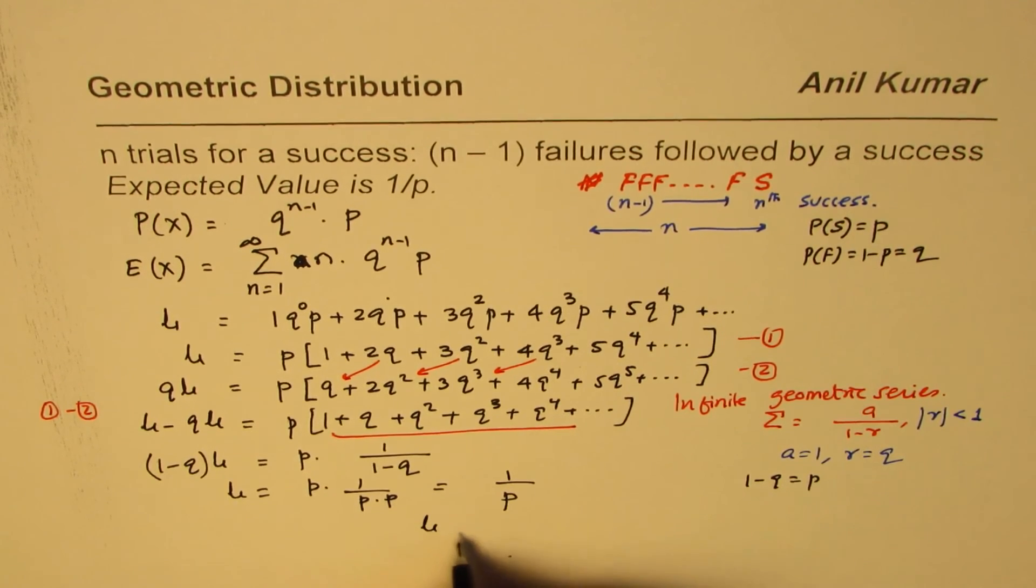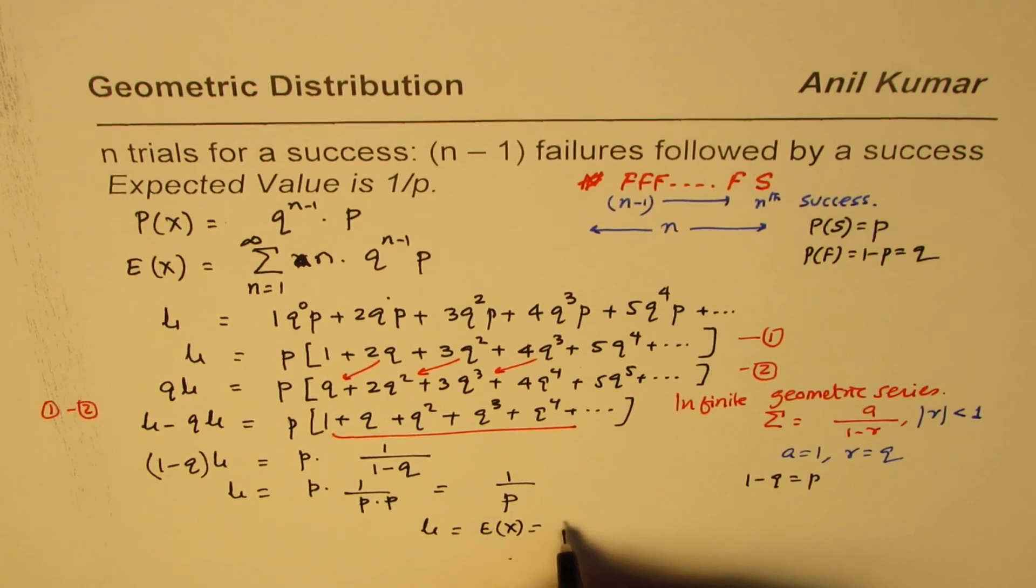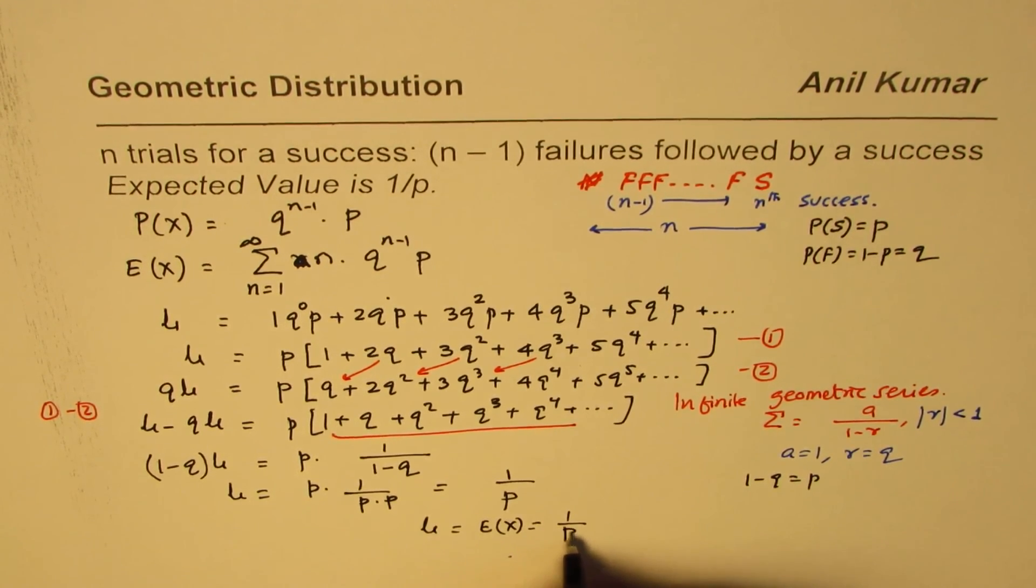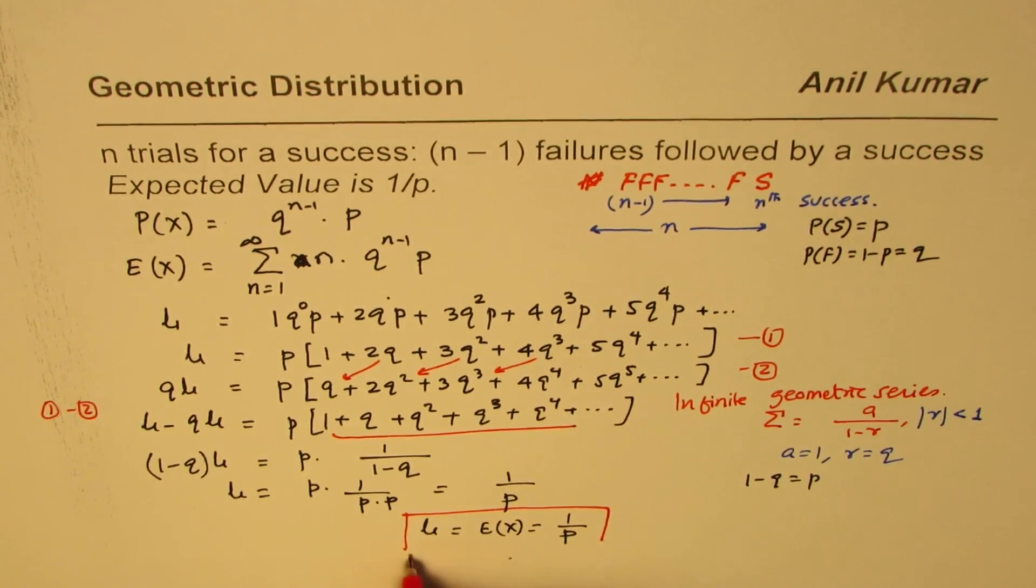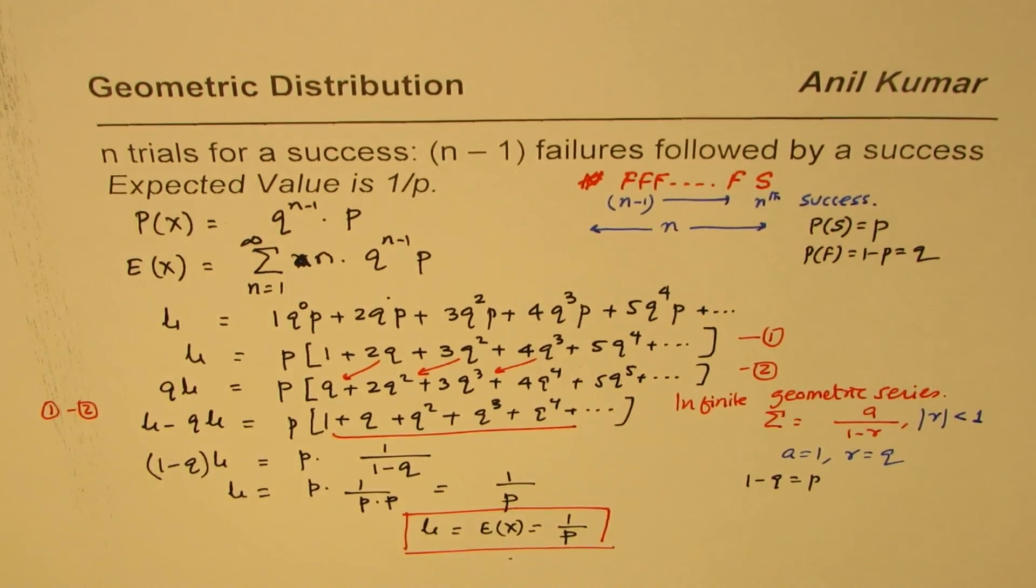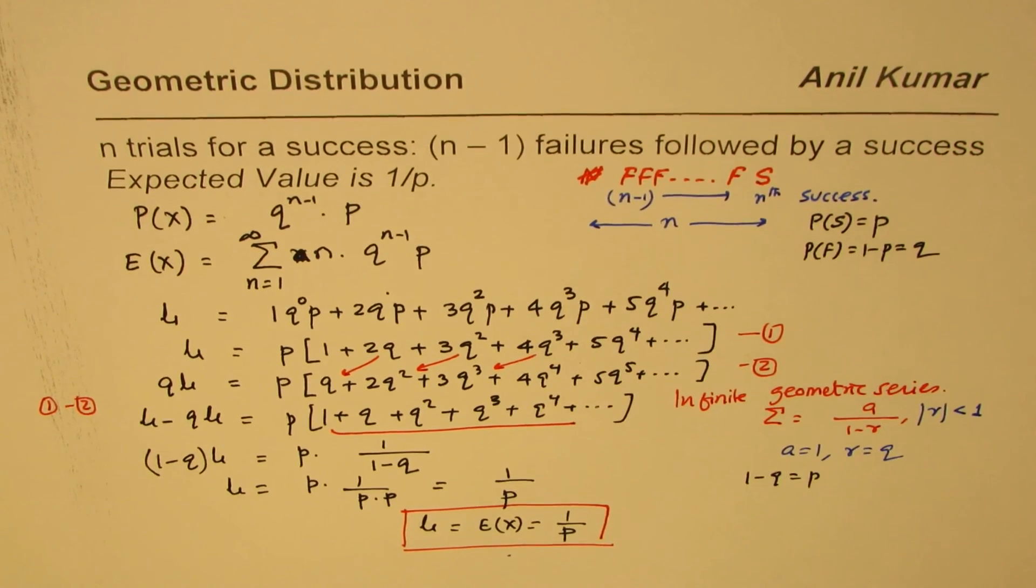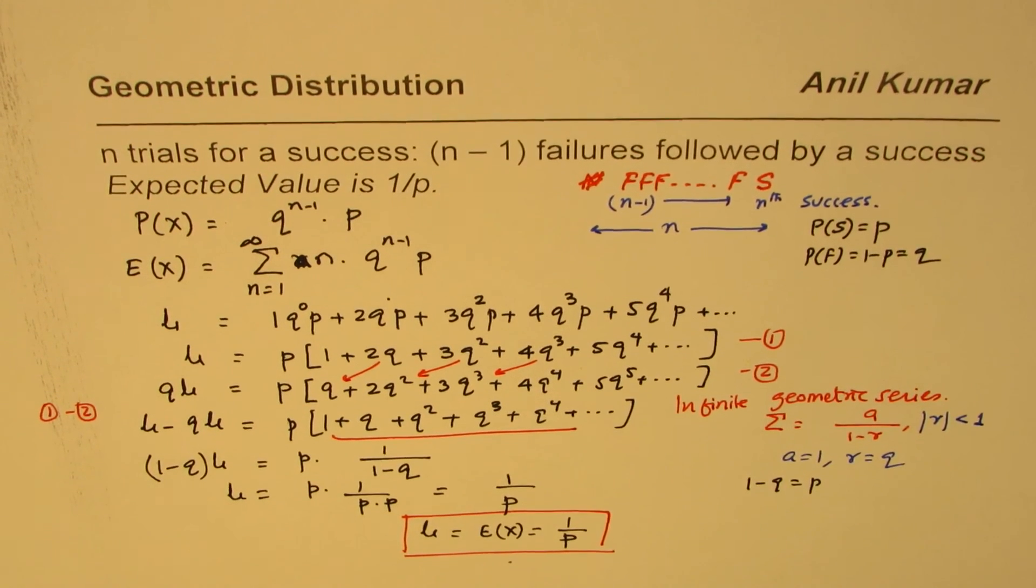So we have seen that the mean or expected value for geometric distribution is 1 over P. That is the derivation for this formula. I hope that helps. I'm Adil Kumar, you can always share and subscribe to my videos. Thank you and all the best.